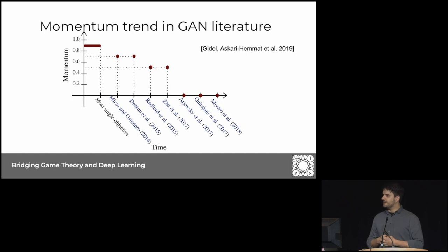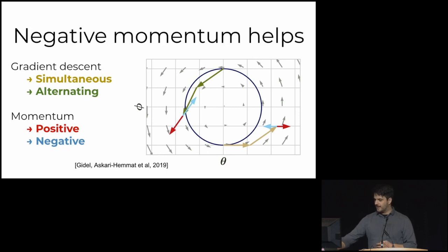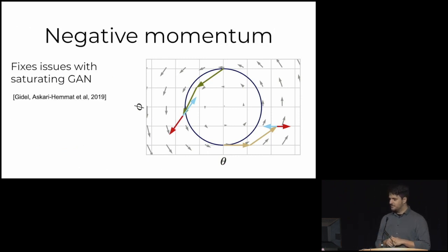It's an interesting trend to observe, so then you start thinking maybe momentum is bad for games, right? This is a game formulation. Maybe that's what's happening. Indeed, it can be shown that positive momentum is bad for games. Actually, negative momentum can help, and it actually fixes the saturating GAN. If you use a negative momentum hyperparameter, the saturating GAN works. You can get results, you can get images out of it, which was not possible by using the traditional tuning that you have for optimization problems.